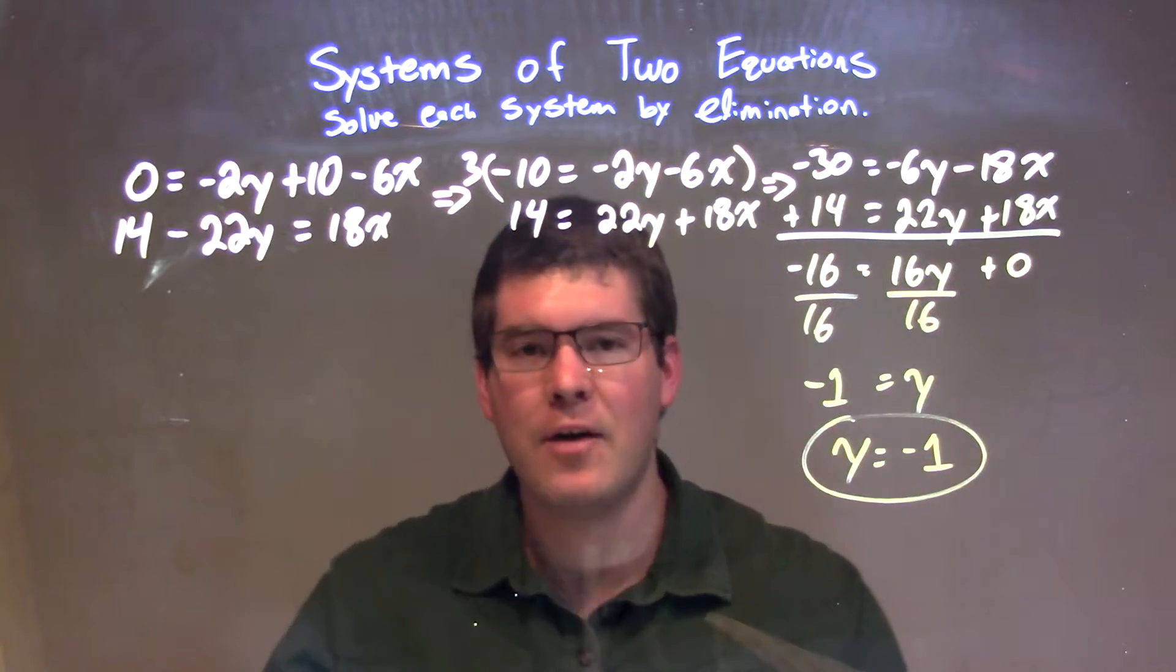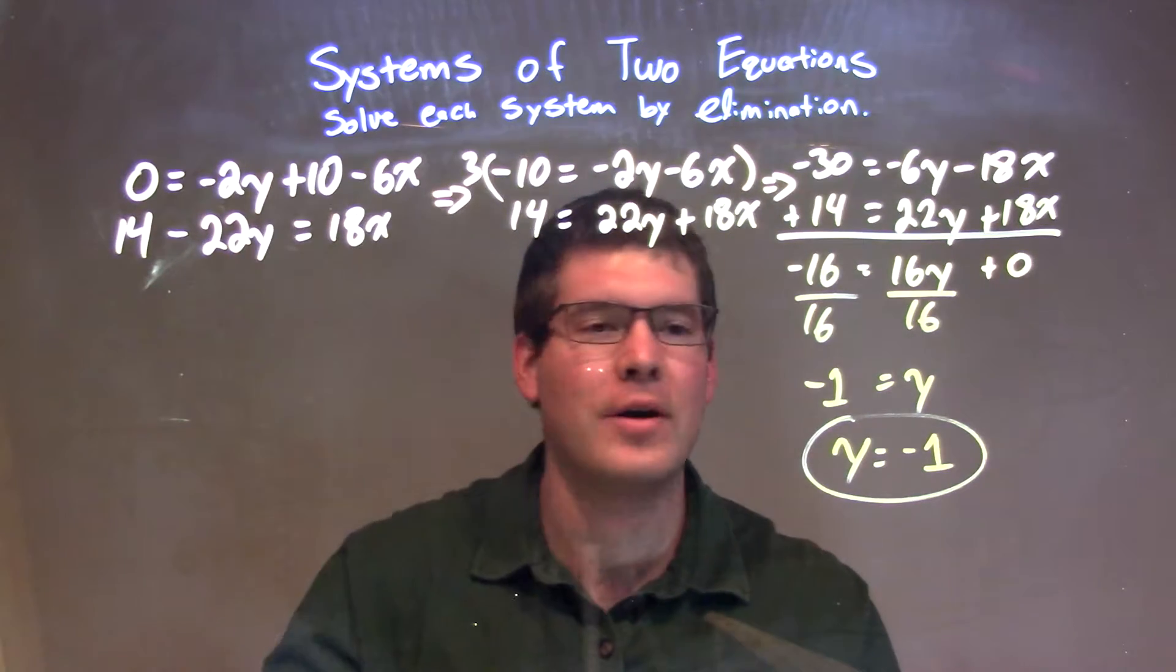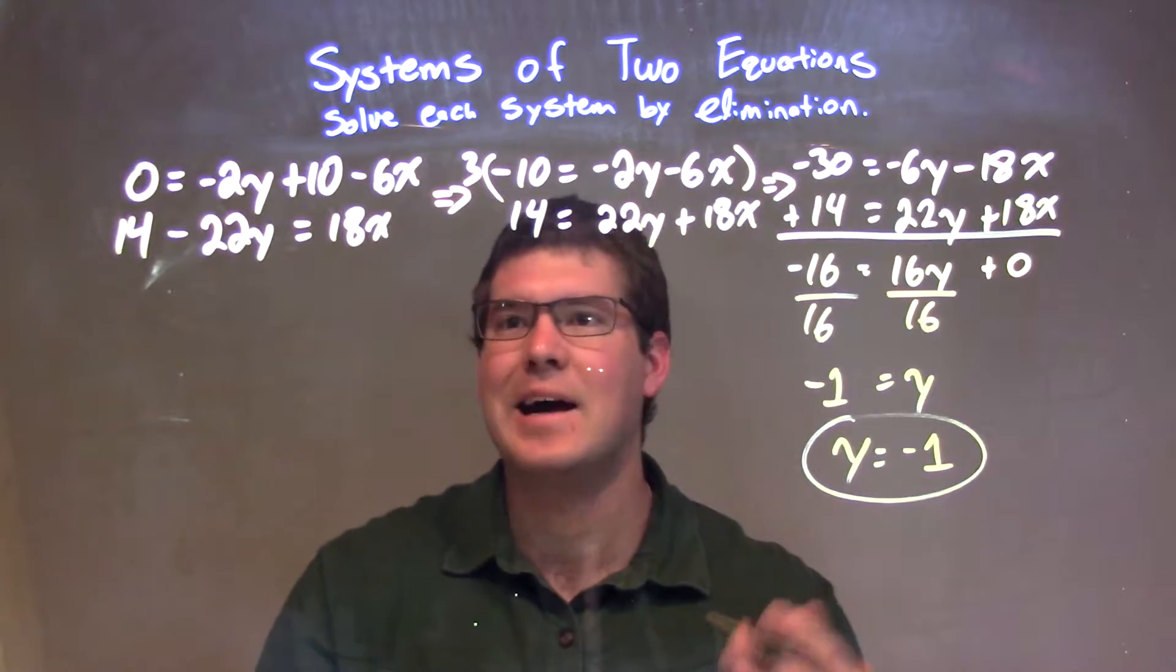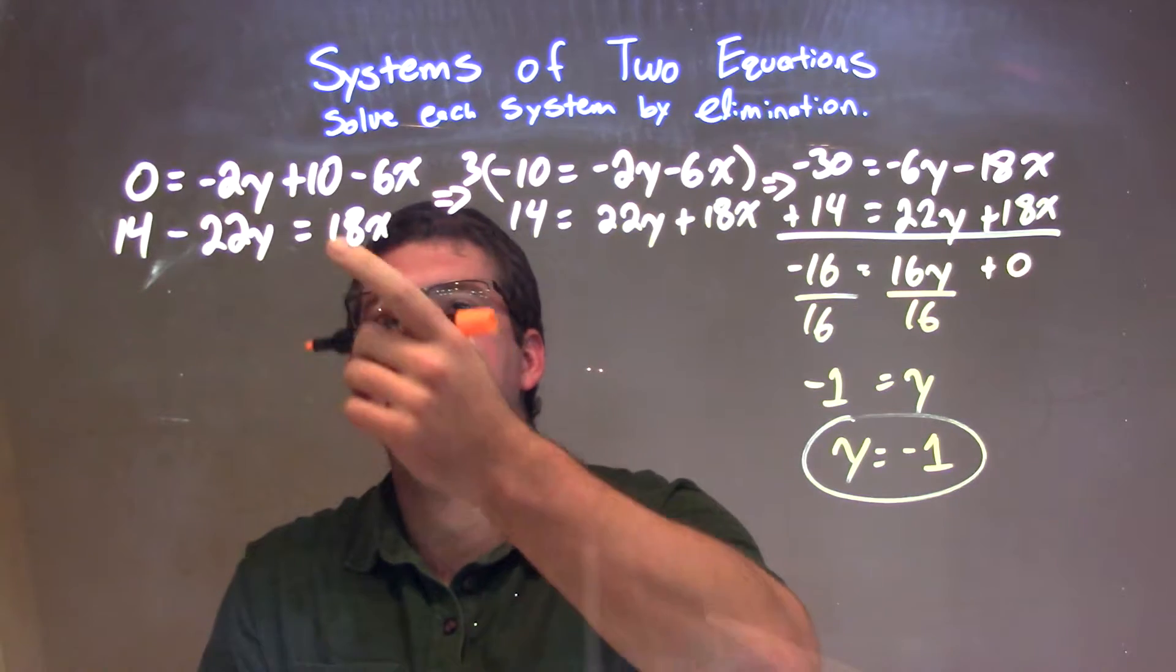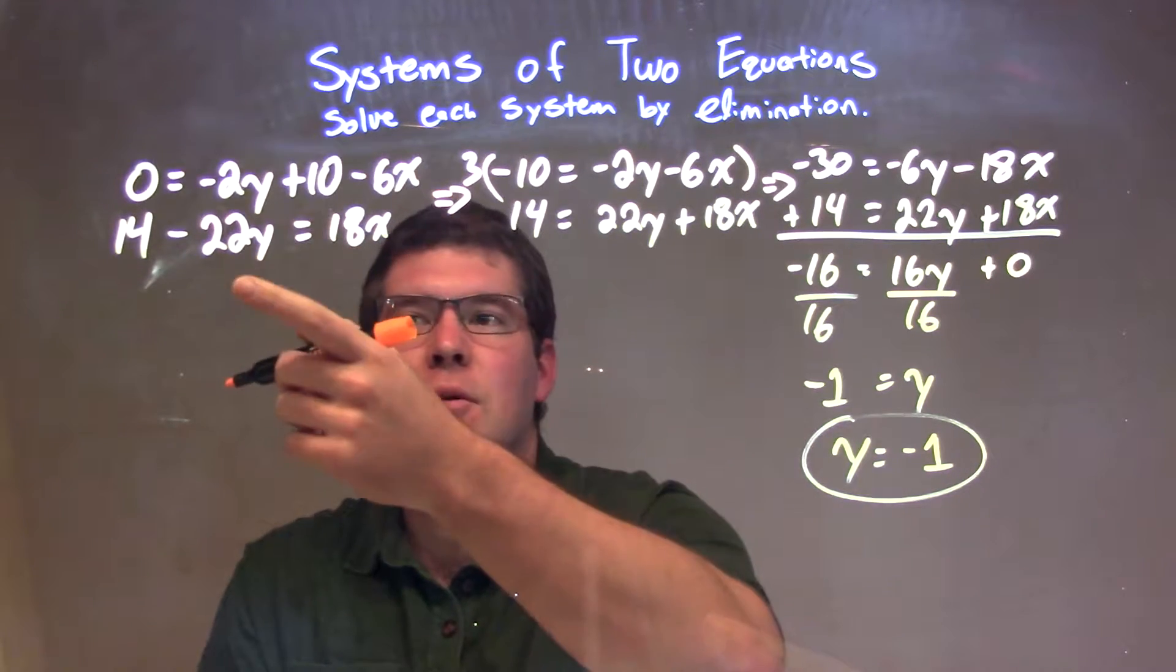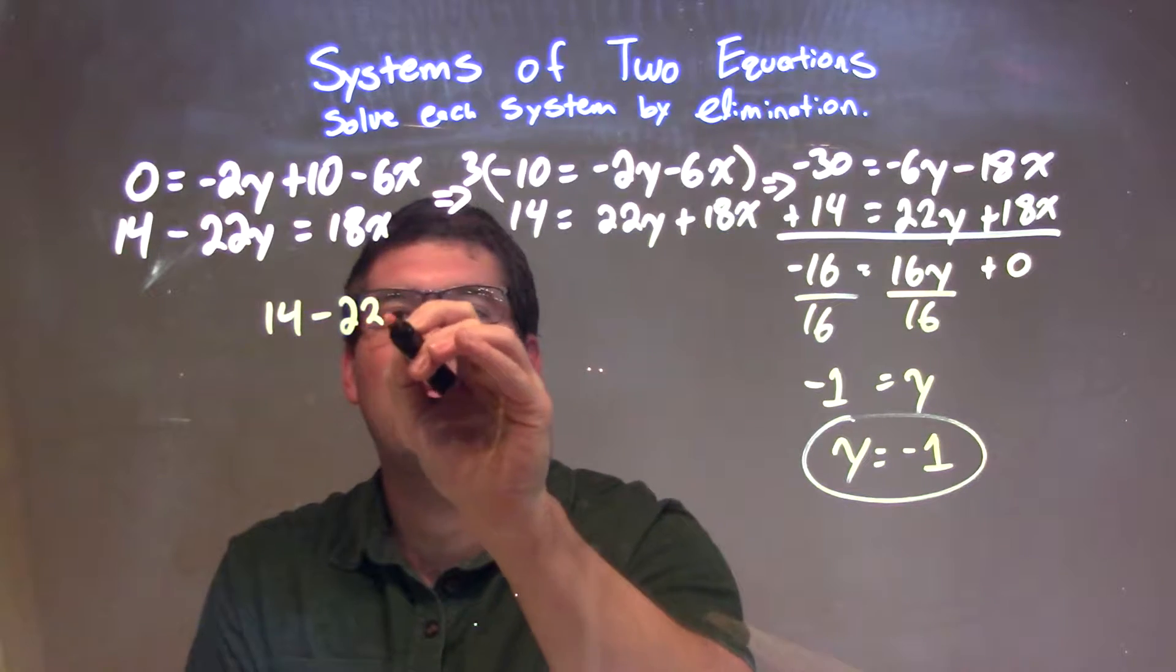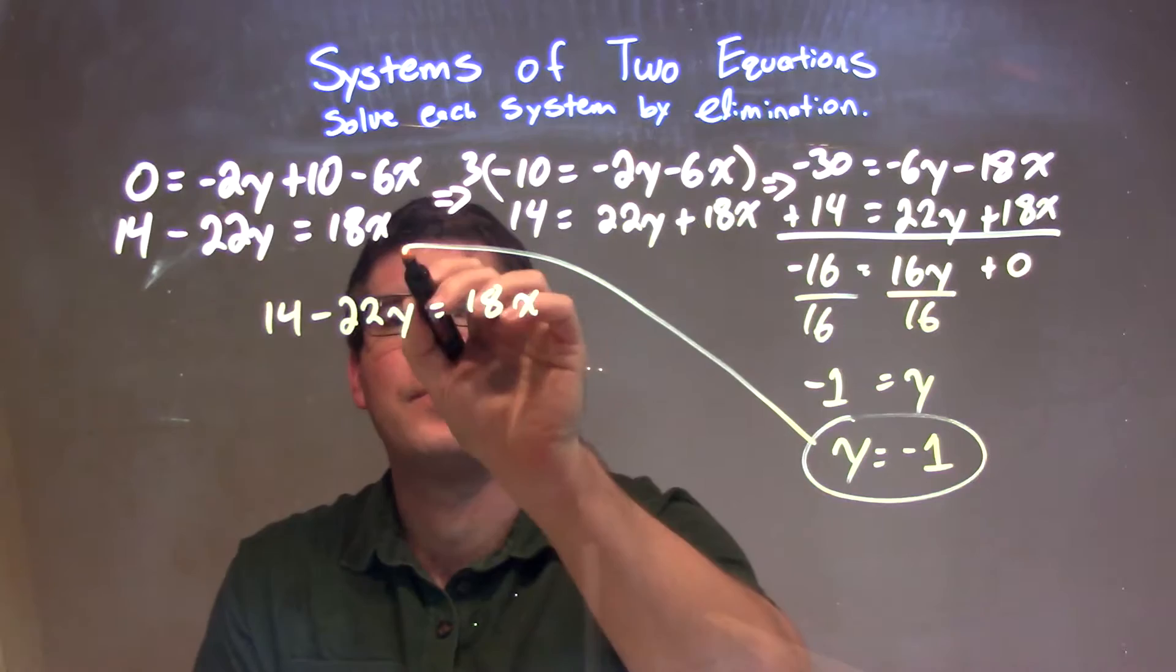Now that we have our y value, we need to plug it back into one of our equations to get our x value. The way we're going to do that is I'm going to take the second equation. I'm going to take that 14 minus 22y equals 18x and plug in negative 1 for y.